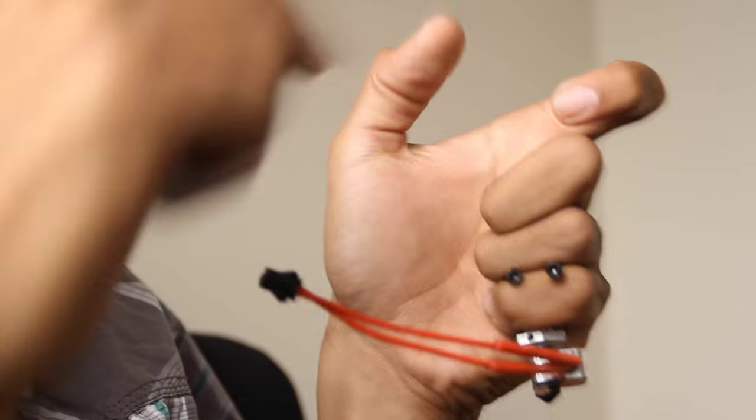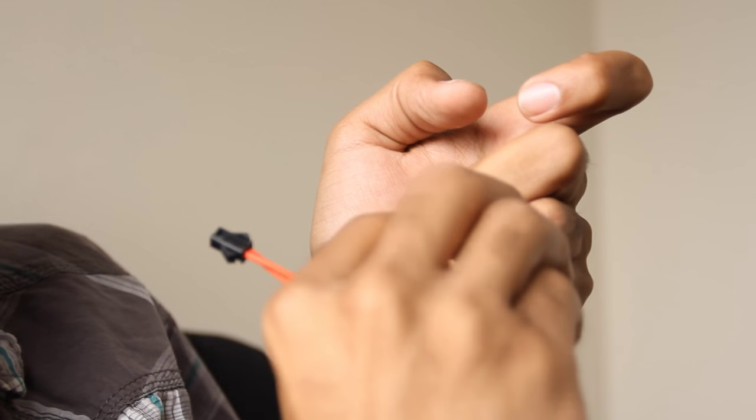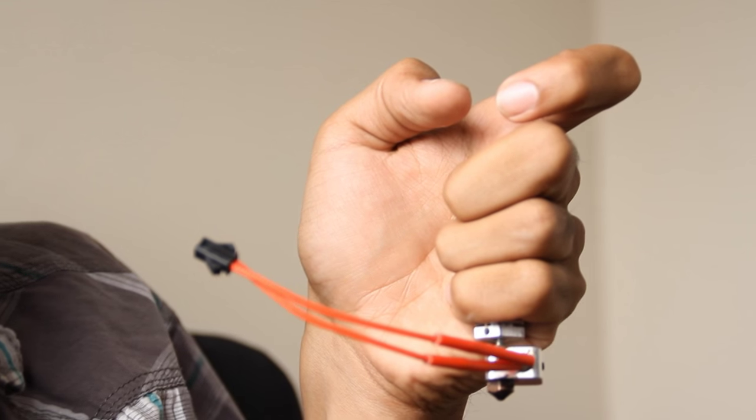But if the filament is too far into the extruder for you to pull out, all you have to do is remove these two bolts on the side, and once you remove the two bolts, the extruder will fall right out, and then you can go inside and remove the filament.